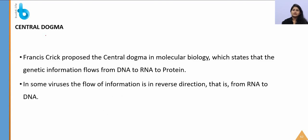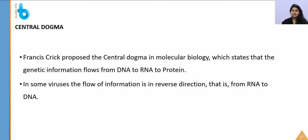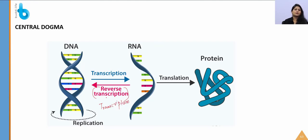Francis Crick proposed the central dogma of molecular biology, which states that genetic information flows from DNA to RNA to protein. DNA to DNA is replication; DNA to RNA is transcription; RNA to protein is translation. In some viruses, reverse transcriptase converts RNA back to DNA — a process called reverse transcription.